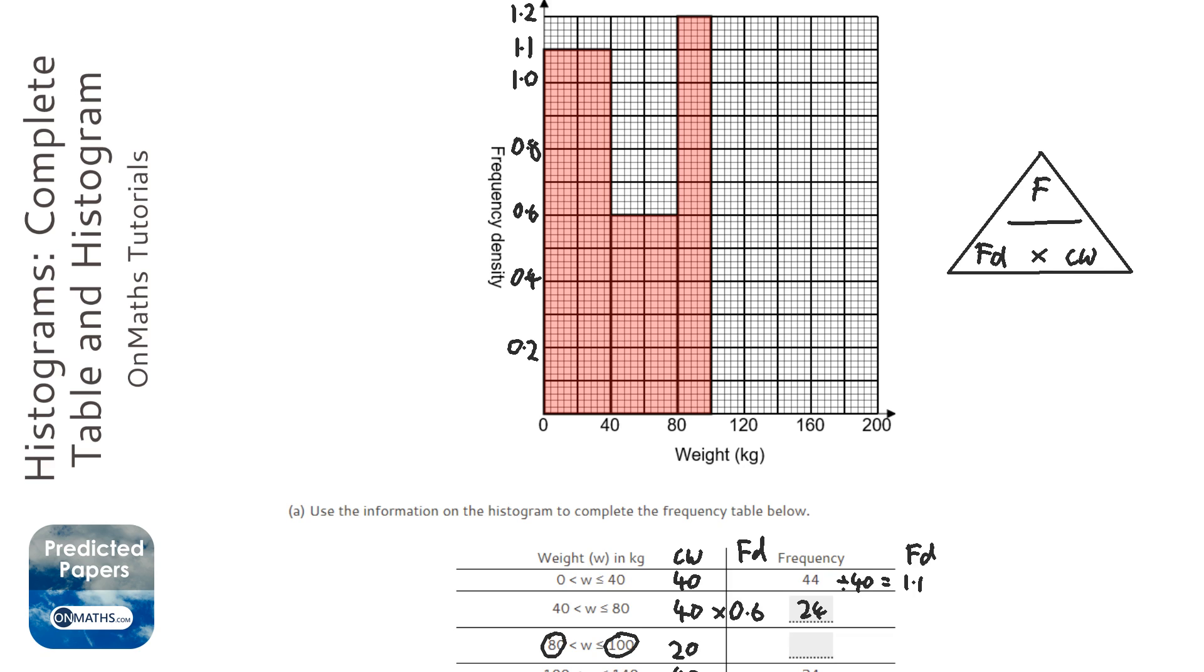The next one has a frequency density of 1.2, looking at the graph, or looking at the histogram, so 1.2. So I'm going to do 20 times 1.2, which is 24 as well.